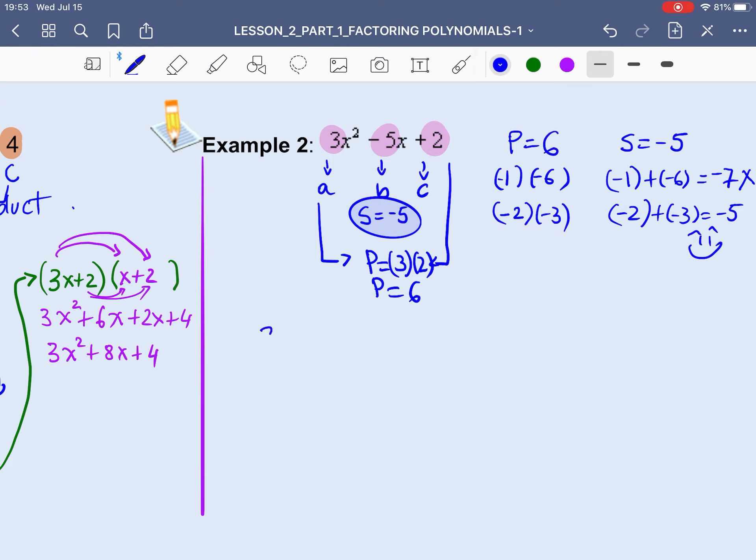So now we're going to break down the middle term. So 3x², instead of -5x, we'll write -2x - 3x. And then +2. And now we are going to group the terms. So we're going to say, first 2, let them be together. Last 2, let them be together. And take out the greatest common factor.